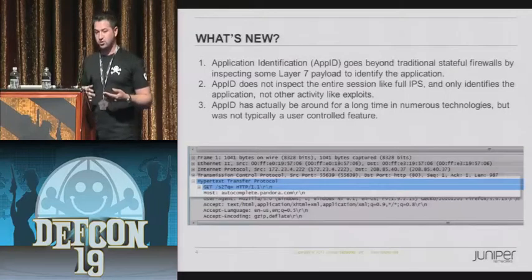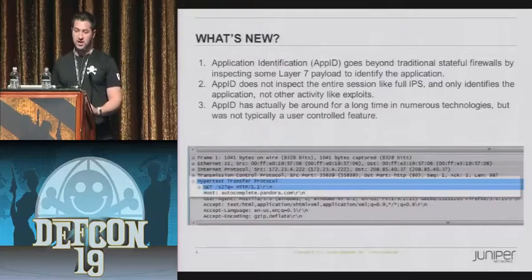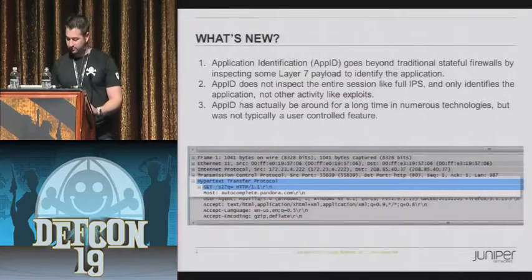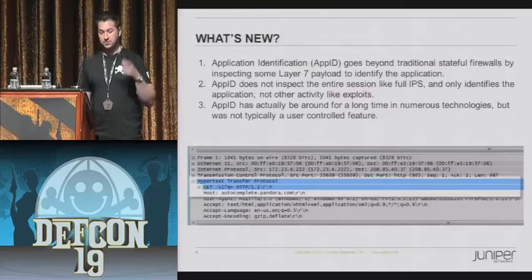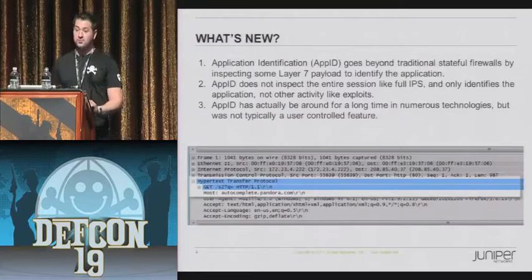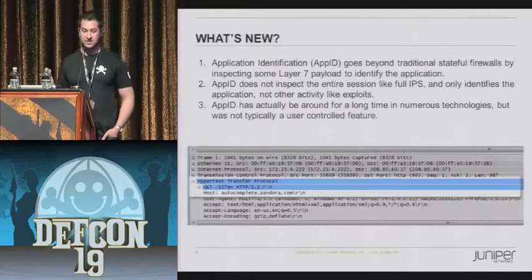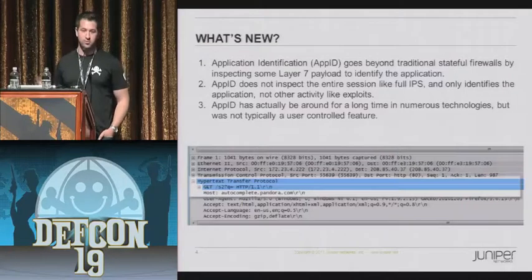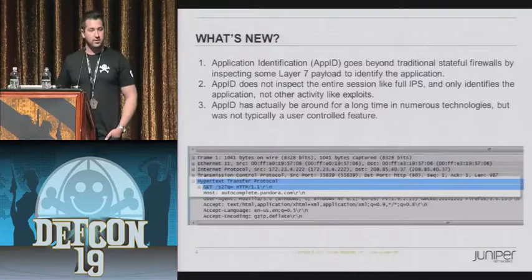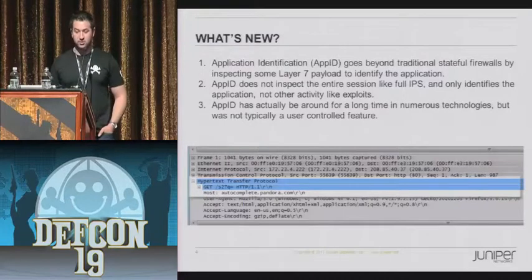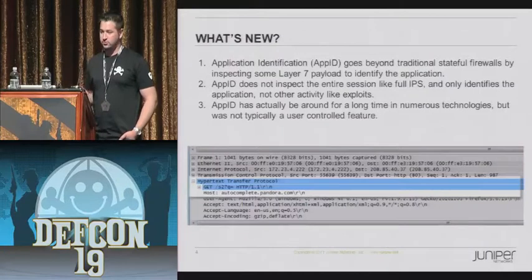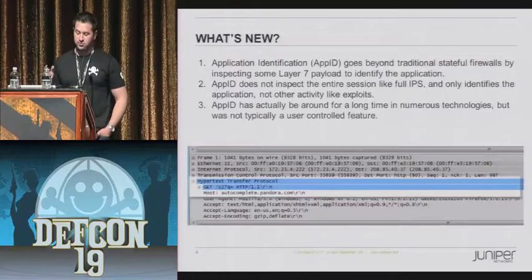App ID has been used in traditional IPS products so they could do port-agnostic detection. You could have HTTP running over port 493 or any port, and it would still apply the detection - the protocol decoders and parsers could be applied regardless of what port it's on. This technology has also been used for URL filtering and network AV products. So it's not anything new, but it's been extended and put into a new application.